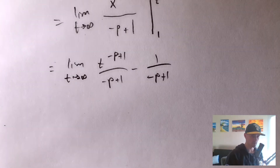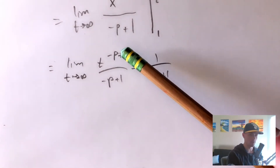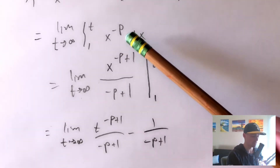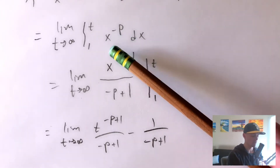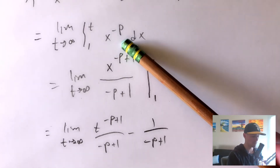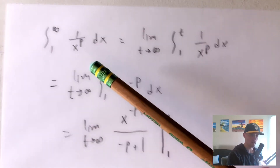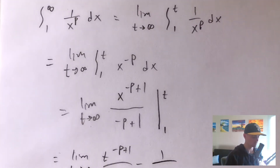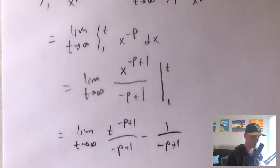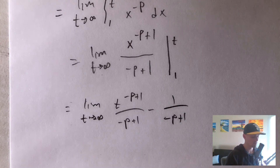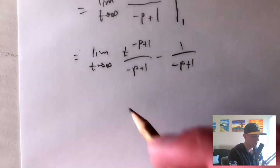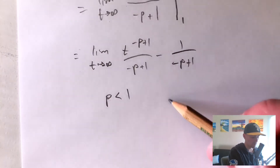Now there are two different cases to consider. We know p is meant to be a positive number — if p were positive and we integrated x to a positive power all the way to positive infinity, that area would be infinitely large. We also exclude p equals 1 since that case was handled separately. So the two cases are: p less than 1, and p greater than 1.